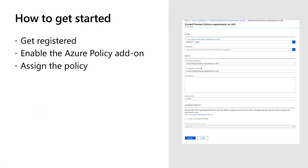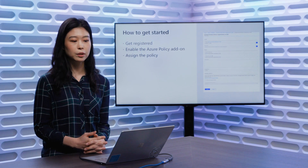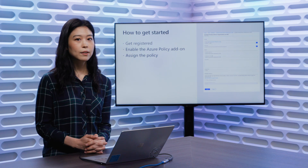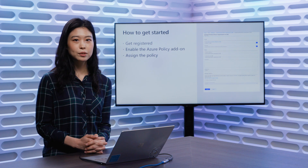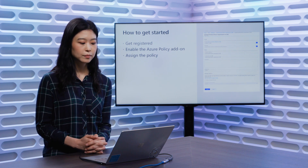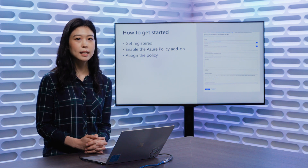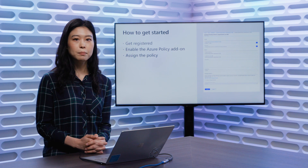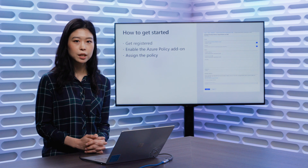This capability is currently in limited preview, and hence your subscription needs to be whitelisted to join the preview. When you go into the policy experience, we have a menu item that says 'Join Preview.' All you have to do is select the subscription you're interested in and onboard. From there, you'll be able to add the policy add-on, which is essentially an agent with the gatekeeper and policy components, to manage the components within your cluster.